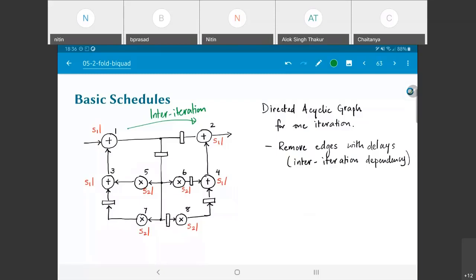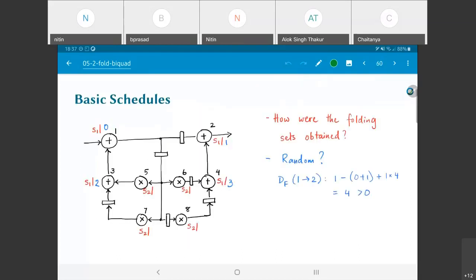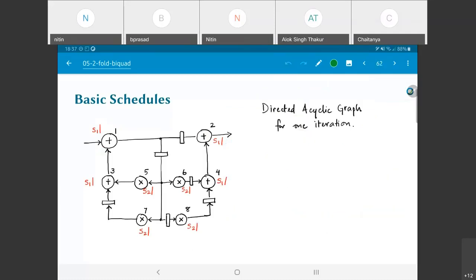Remember that the rectangles that I have shown over here, the d elements, do not correspond to physical registers. Because in the actual system that we have, I have only one adder and one multiplier. In this, what I have is each of these delay elements is actually a logical delay element. It basically says this is one iteration dependency.